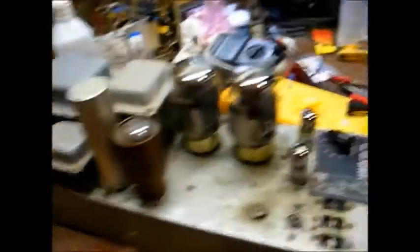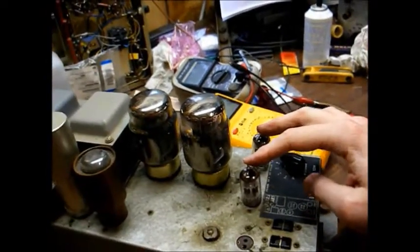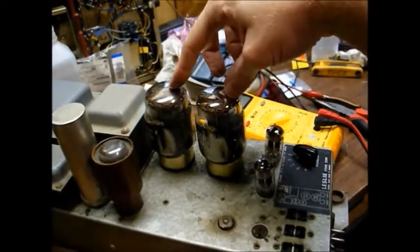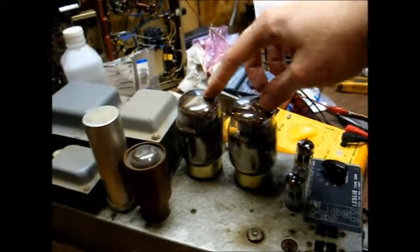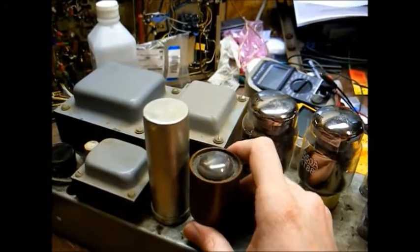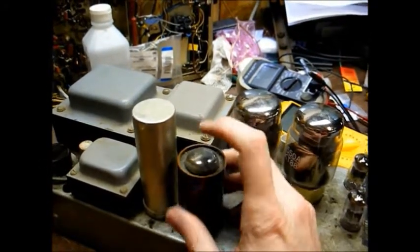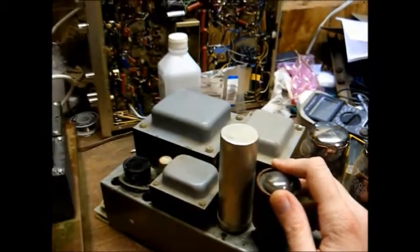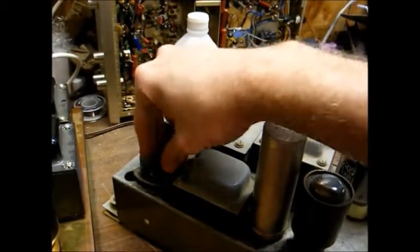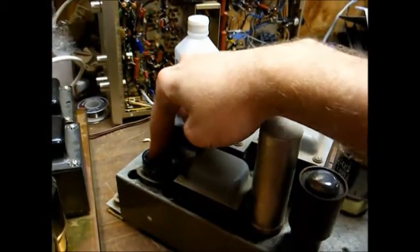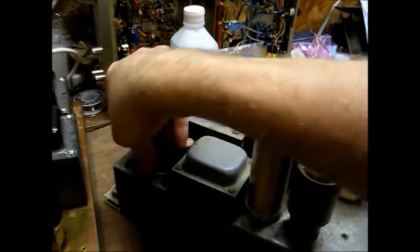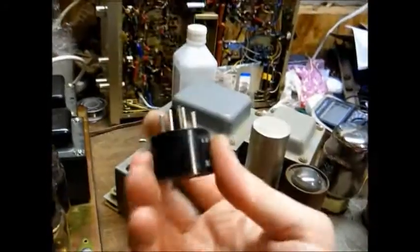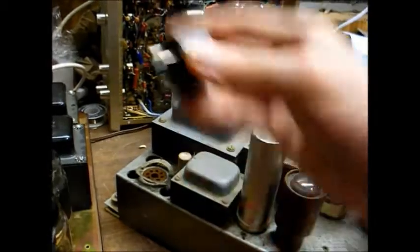And here's the tube line-up. A couple of 12AU7s, two KT88s in push-pull. I believe this is a 0C3, which is the voltage regulator tube. And this used to be a 5U4 tube in this socket. But someone replaced it with a modern solid-state plug-in replacement.